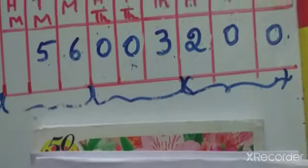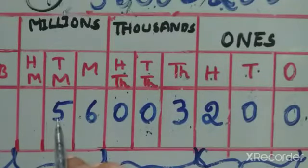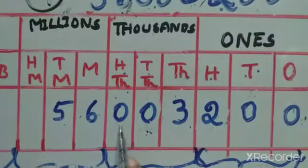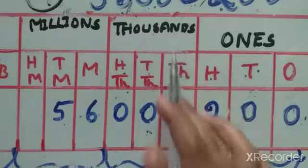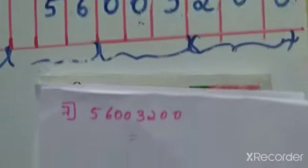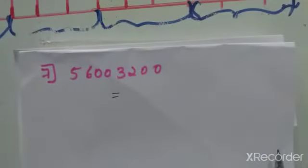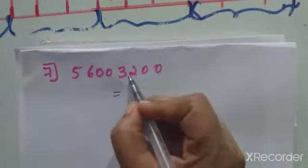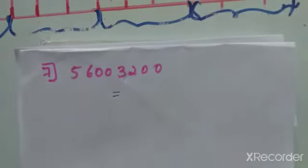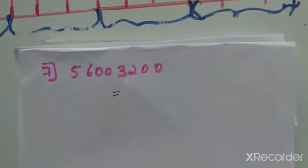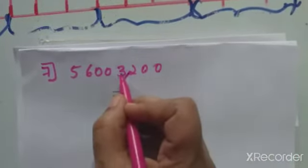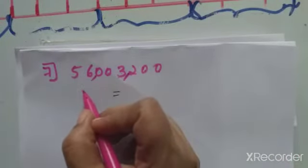Now how to write this number in words. We have 56 million in the millions group, 3,000 in the thousands group, and 200 in the ones group. After placing commas every 3 digits from the right, we get two comma separations.